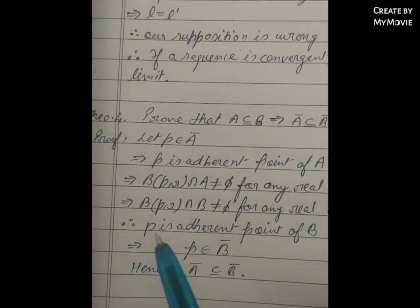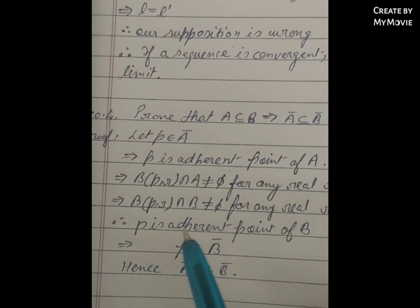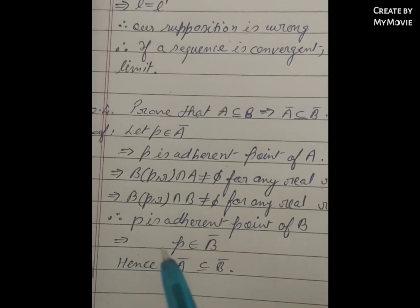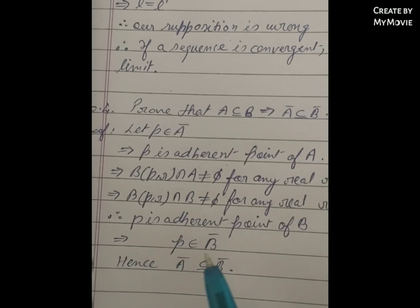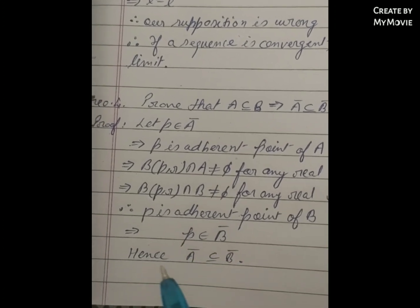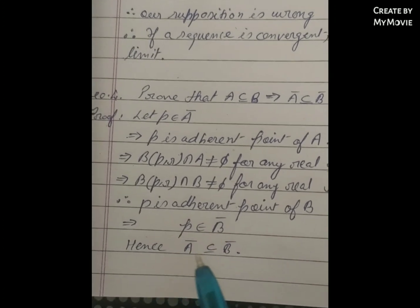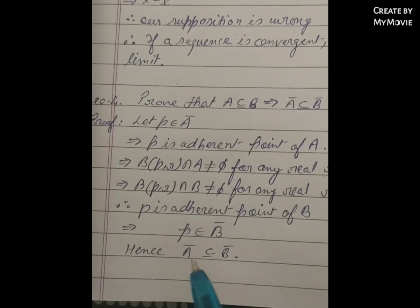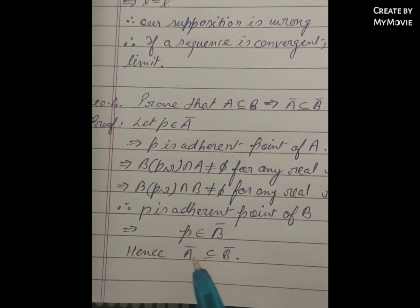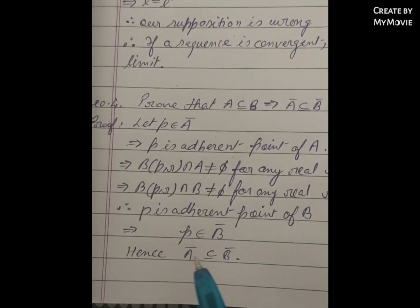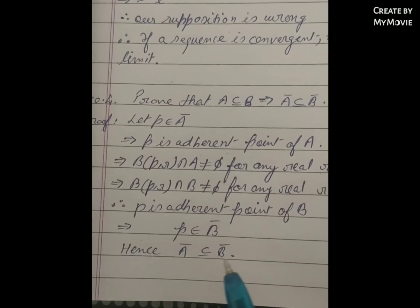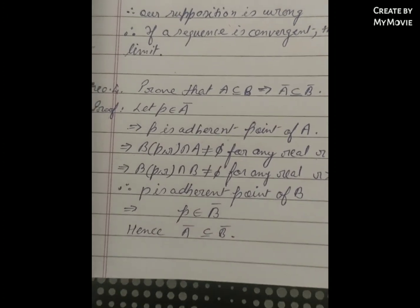So, P is an adherent point of B, which implies P belongs to the closure of B. Hence, closure of A ⊆ closure of B.